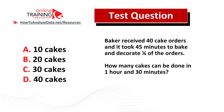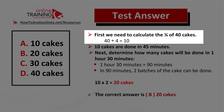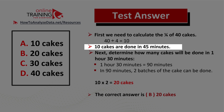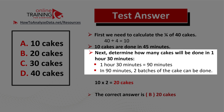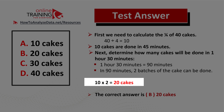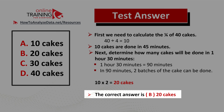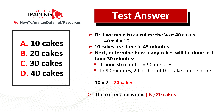Did you figure out the solution? To solve this challenge, we first need to calculate one quarter of the cakes: 40 divided by 4 equals 10. So 10 cakes can be done in 45 minutes. One hour 30 minutes is 90 minutes, which is double 45 minutes, so two batches can be done. If we can do 10 cakes in 45 minutes, we can do 20 cakes in 90 minutes. The correct answer is choice B, 20 cakes.